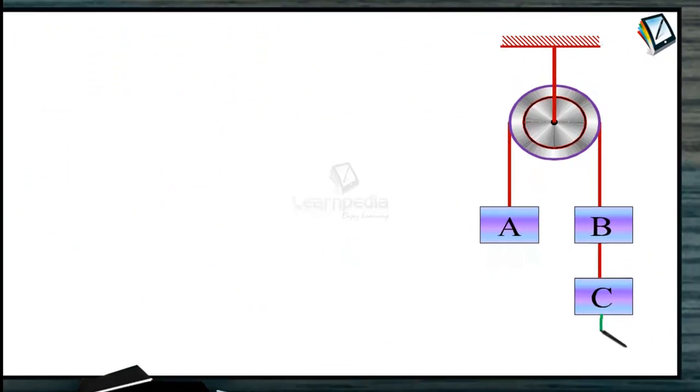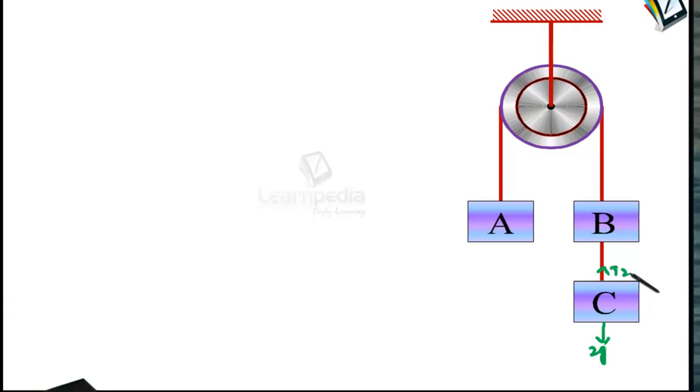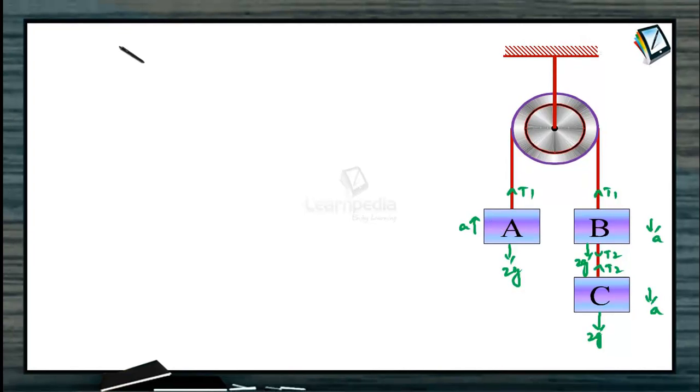So, on this mass we have taken this as 2g. Tension here as T2. This is moving down with acceleration A. This is also moving down with acceleration A. Tension T2. This side is 2g. This tension is T1. Here tension T1. This is again 2g. This is moving upward with acceleration A. Now, we got it as T2 is equal to 4A.